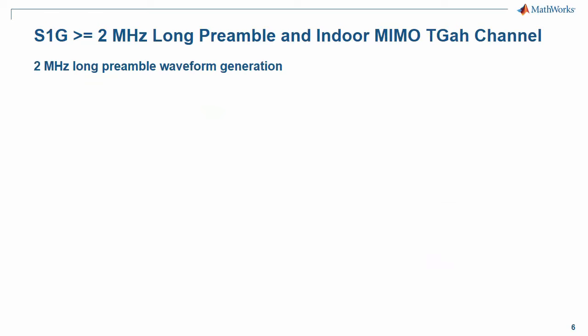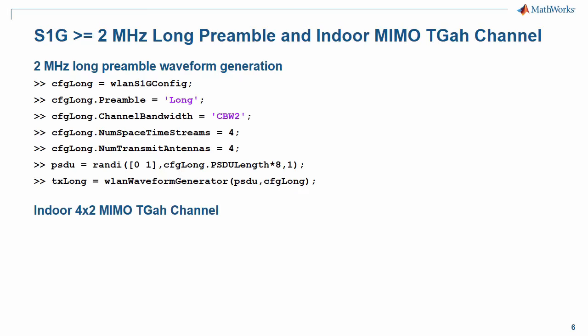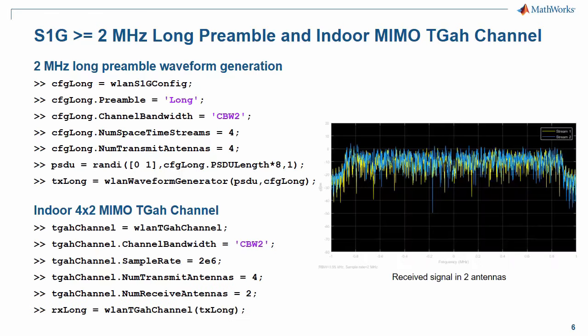The third transmission mode defined in 802.11ah is the S1G long preamble mode, with channel bandwidth between 2 and 16 MHz. The long preamble is set up by specifying the preamble property of the WLAN S1G config object to long and a channel bandwidth greater than or equal to 2 MHz. This example generates a waveform with 4 space-time streams transmitted through 4 transmit antennas. The generated waveform is transmitted through an indoor 4x2 MIMO TGah channel with 4 transmit antennas and 2 receive antennas. With the WLAN TGah channel configuration object, we define the properties of the indoor MIMO TGah channel model. The receive signal in 2 antennas can be displayed with the DSP spectrum analyzer.